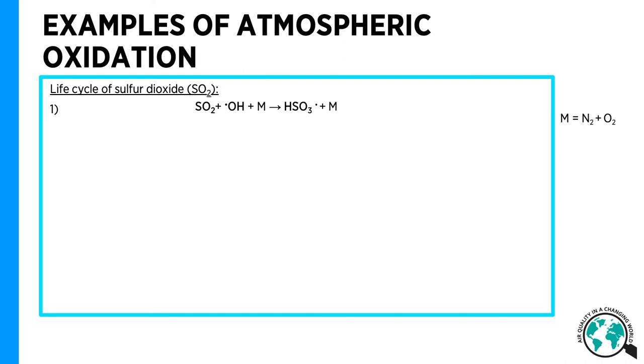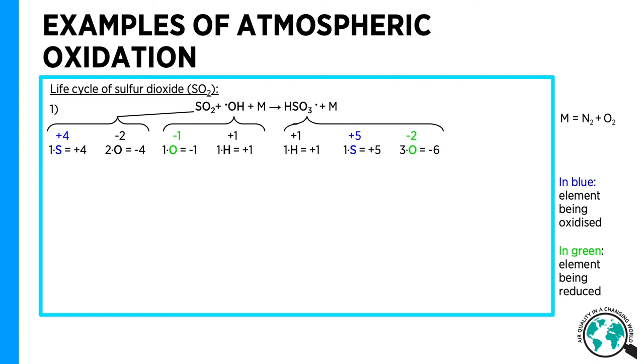The first step is the rate-limited step where sulfur is being oxidized by OH. Sulfur in SO2 goes from an oxidation state of plus 4 to an oxidation state of plus 5 in HSO3. In this reaction, sulfur is being oxidized, while the oxygen in OH is being reduced. Oxidation states of radicals aren't very well defined, and plus 5 is not an existing oxidation state for stable sulfur compounds. But for illustrative purposes, to show you how the oxidation number goes up along the oxidation chain, I have here given sulfur in HSO3 the oxidation state of plus 5.